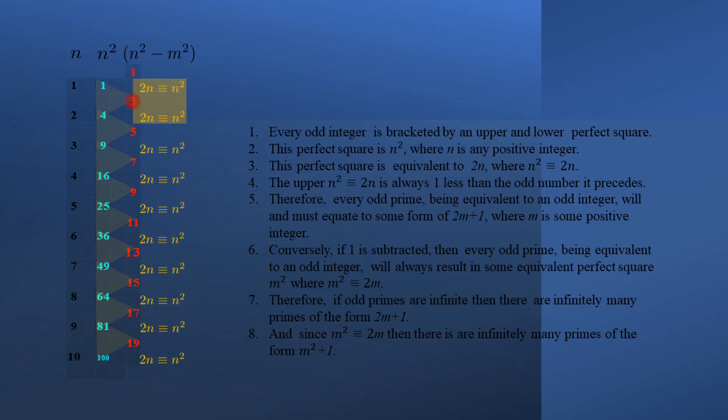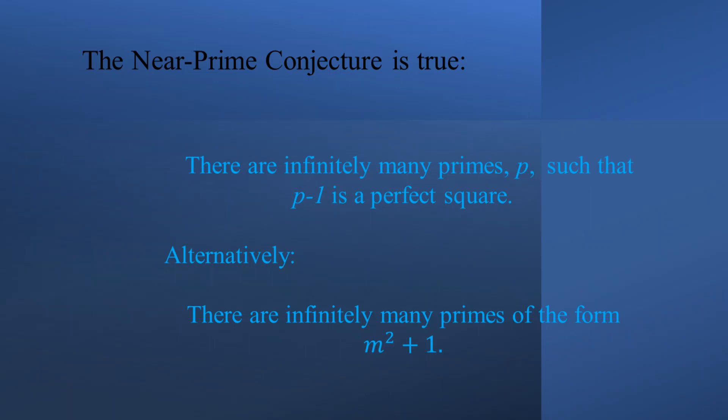According to the power rule of exponents and the Quikian power rule, this perfect square is equivalent to 2n where n squared is equivalent to 2n. The upper n squared, which is equivalent to 2n, is always one less than the odd number it precedes. Therefore, every odd prime being equivalent to an odd integer will equate to some form of 2m plus 1. Conversely, if 1 is subtracted, then every odd prime will always result in some equivalent perfect square m squared, where m squared is equivalent to 2m. And if odd primes are infinite and equivalent to odd integers bracketed by n squared equals 2n, then there are infinitely many primes of the form 2m plus 1, and since m squared is equivalent to 2m, there are infinitely many primes of the form m squared plus 1.